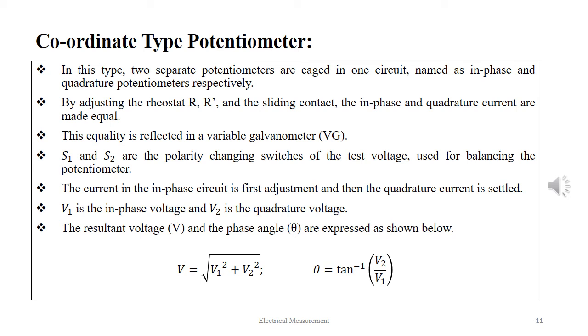S1 and S2 are the polarity-changing switches of the test voltage used for balancing the potentiometer. The current in the in-phase circuit is first adjusted and then the quadrature current is settled. V₁ is the in-phase voltage and V₂ is the quadrature voltage. The resultant voltage V and the phase angle θ are expressed as: V = √(V₁² + V₂²) and θ = tan⁻¹(V₂/V₁).